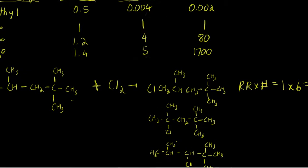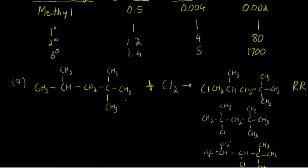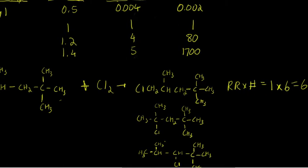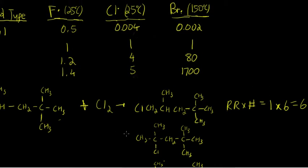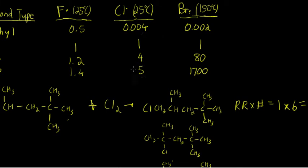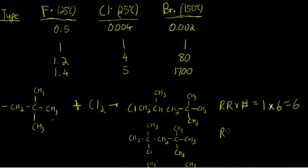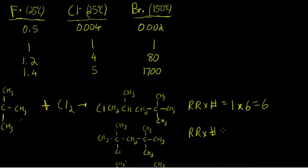Looking at this product — this is a tertiary chlorination product. It results from substitution of this tertiary hydrogen with the chlorine atom. Referring to the table, tertiary hydrogens have a relative reactivity with chlorine of five. There's only one of them, so relative reactivity times the number is five times one, which equals five.